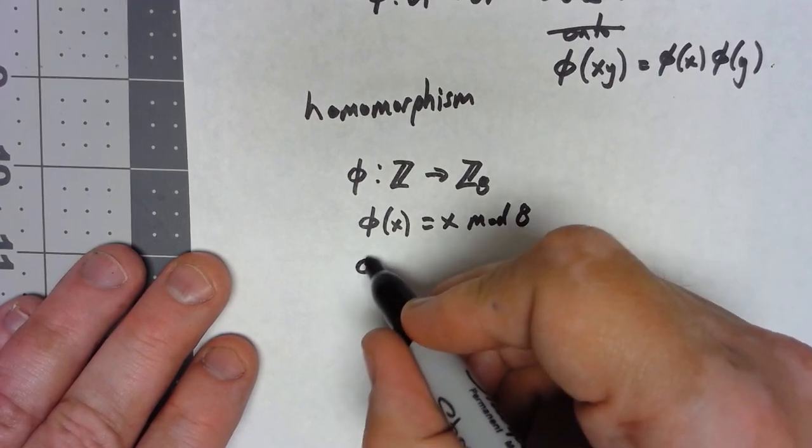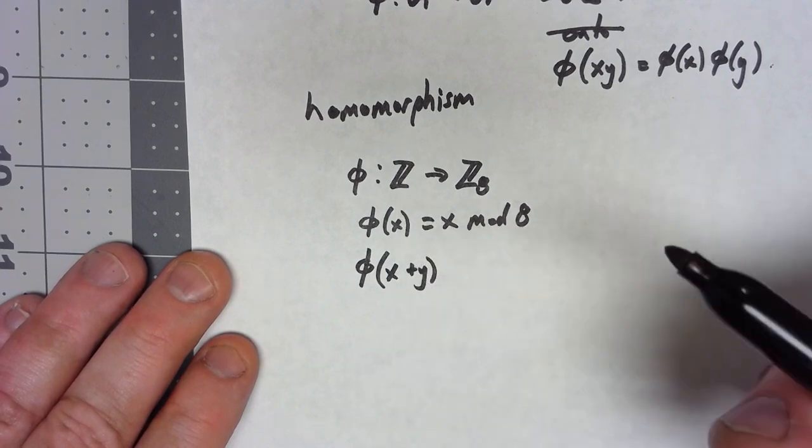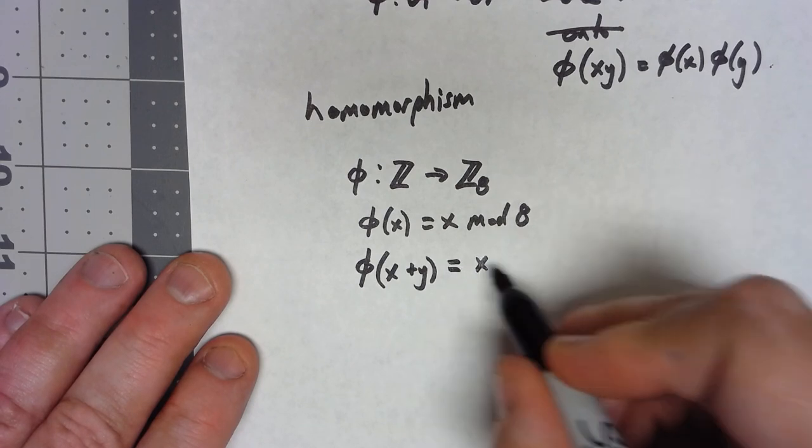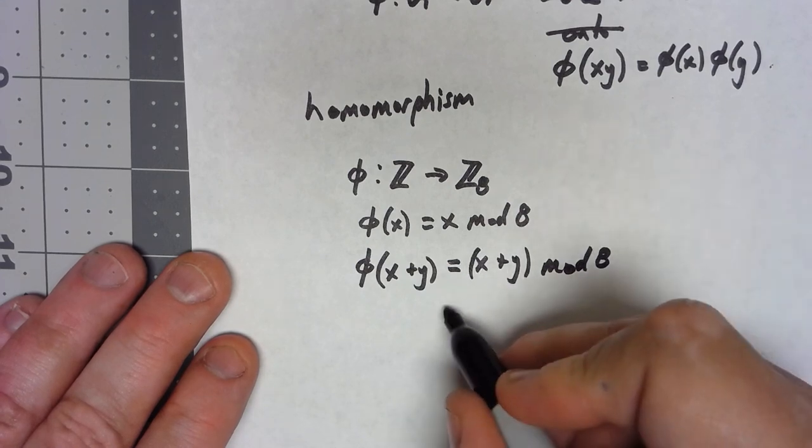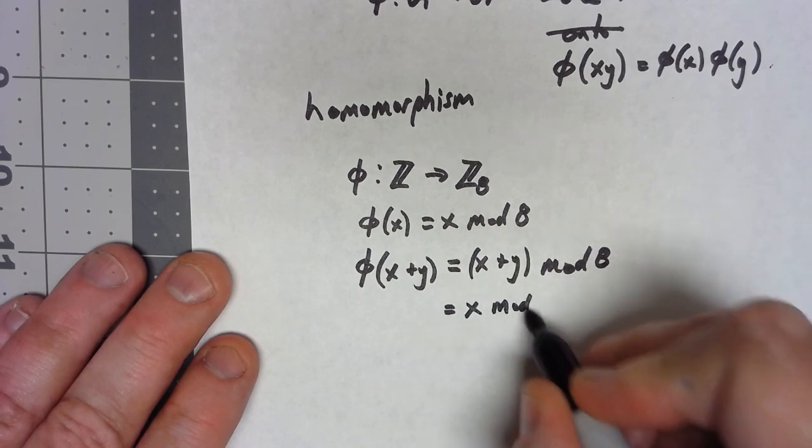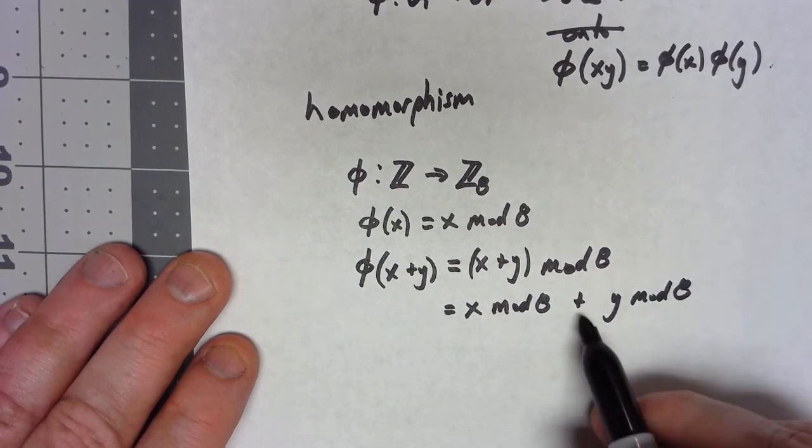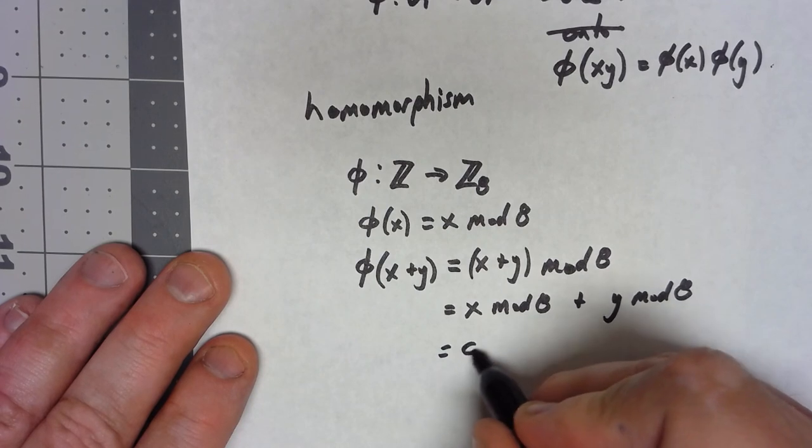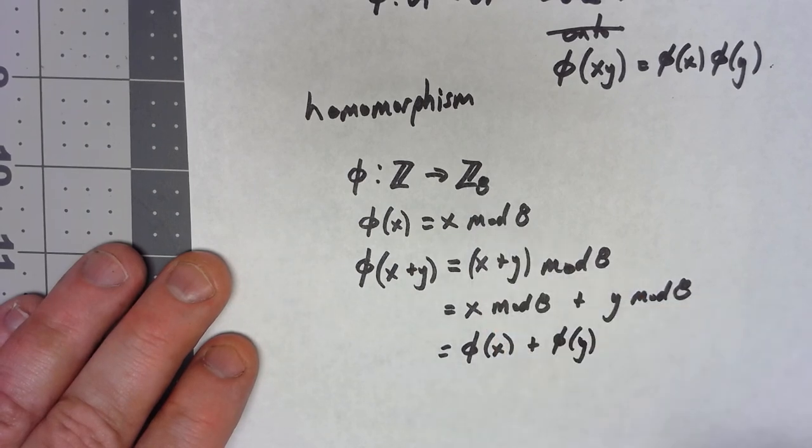Well, if I do phi of x plus y, because the addition in Z is addition, I'm going to have x plus y mod 8. But because of the way modular arithmetic works, that is the same thing as x mod 8 plus y mod 8, assuming that addition is done mod 8, which is the operation of Z8. So that is phi of x plus phi of y where the plus is done in Z8.